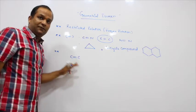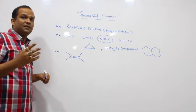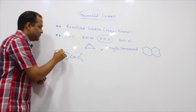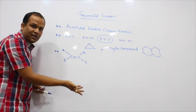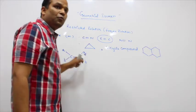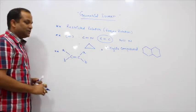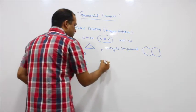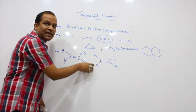For geometrical isomerism, both doubly bonded carbon atoms should be substituted by two different substituents. For example, if one carbon has substituents A and B, and the other carbon also has two different substituents — say C and D — they may be different. This carbon should have two different groups, and that carbon should also have two different groups.